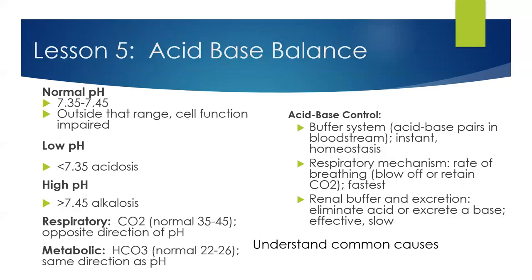Acid-base balance is a section that is very overwhelming and confusing, and it does take a while to master. Your big takeaways are to know what the normal numbers are and what they look like when they're not normal. A normal pH range is 7.35 to 7.45. A low pH would be acidosis; a high pH is alkalosis. Compensation mechanisms that maintain normal serum pH levels include buffer pairs in the circulating blood system, changes in respiratory rates, and renal acid elimination or base excretion.